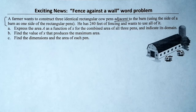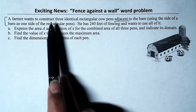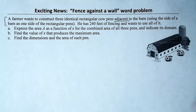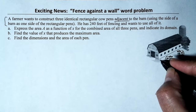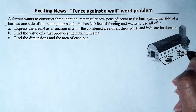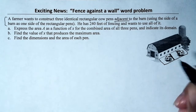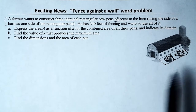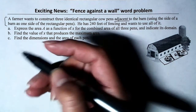We have three questions. Part A: express the area A as a function of x for the combined area of all three pens and indicate its domain. Let me sketch what's going on. We're using one of the barn walls, and we want three pens — so it's one big rectangle cut into three pieces. Those will be our three pens.